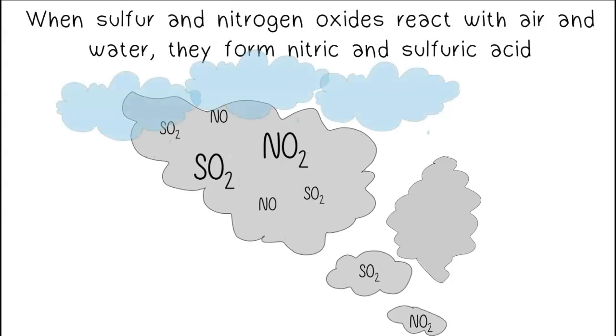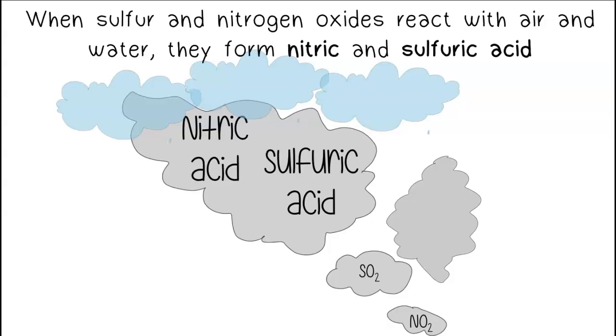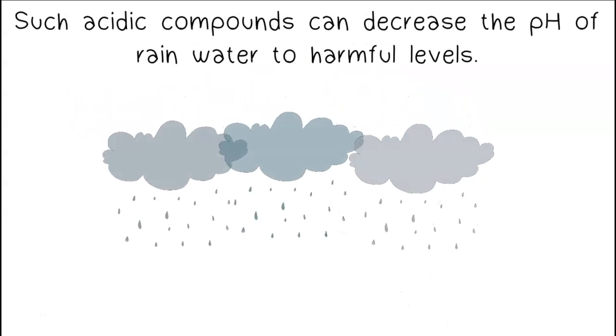When sulfur and nitrogen oxides react with air and water, they form nitric and sulfuric acid. Such acidic compounds can decrease the pH of rainwater to harmful levels.